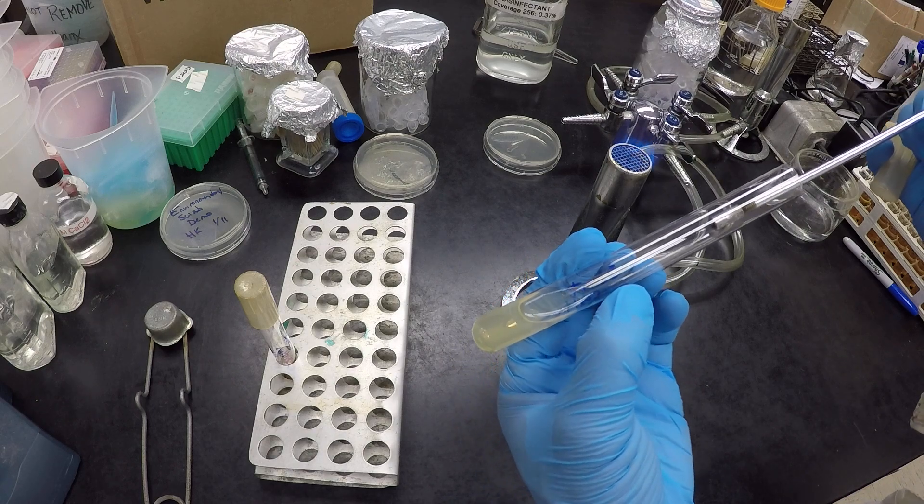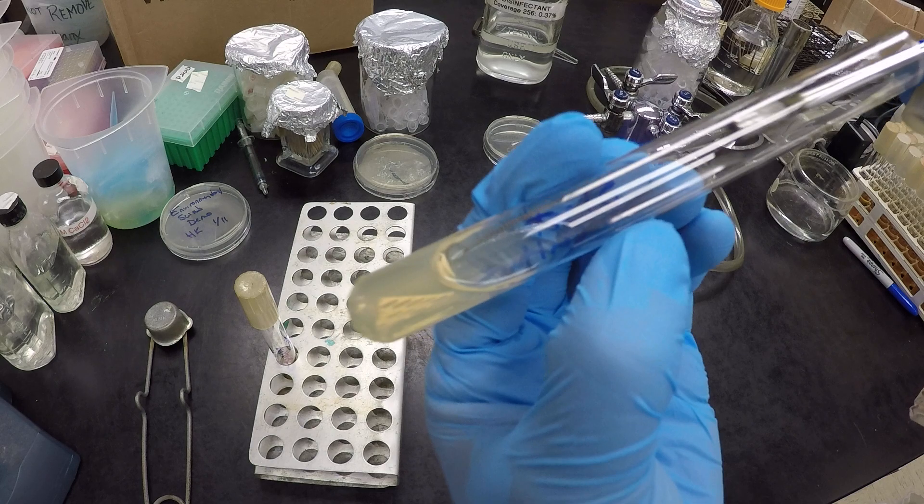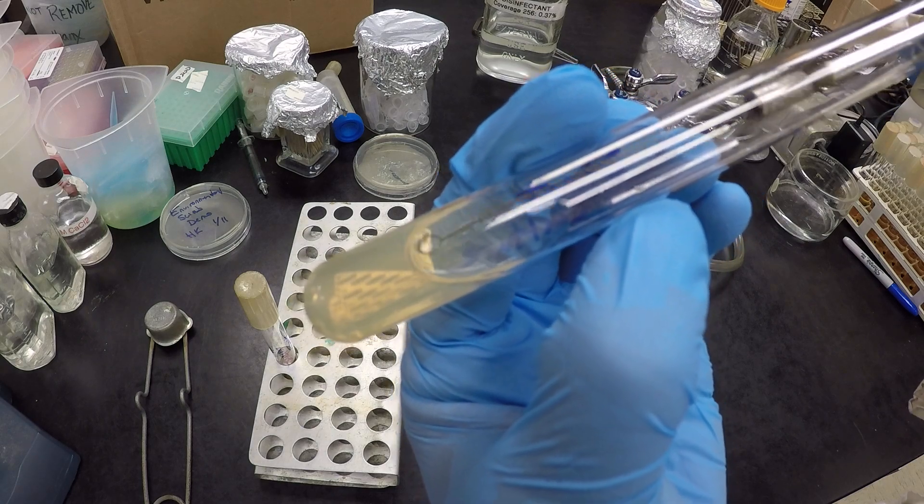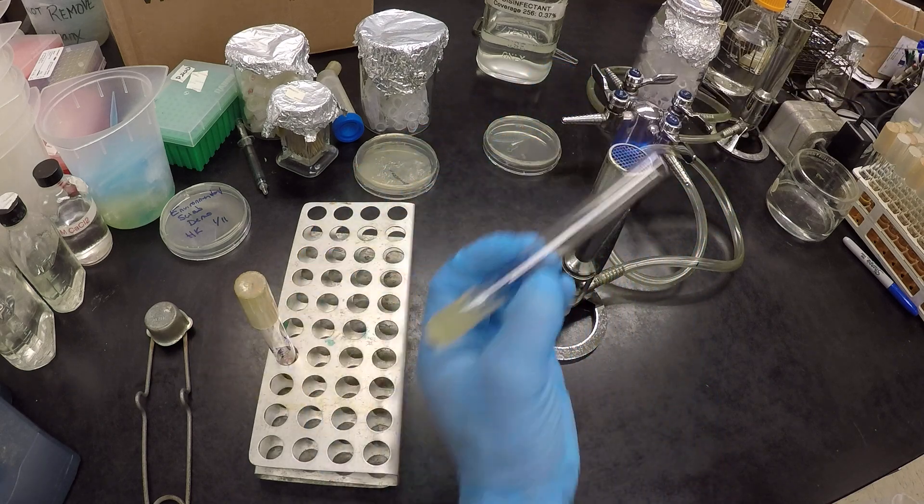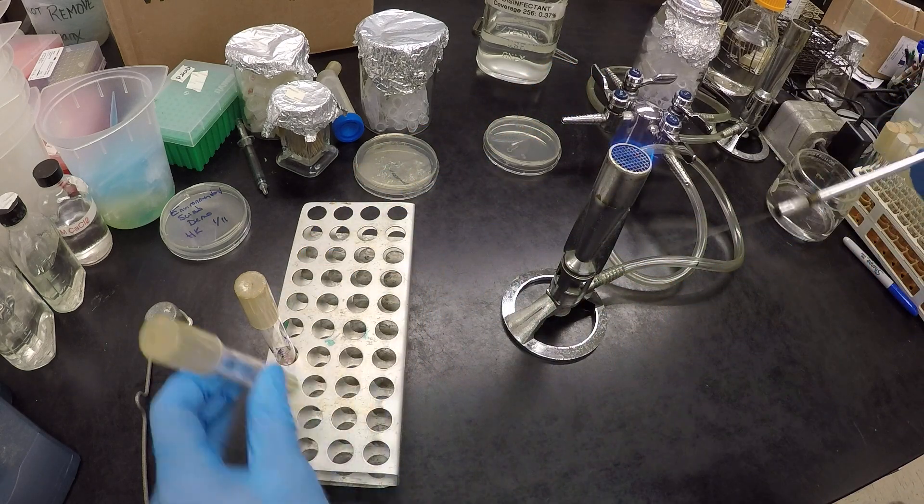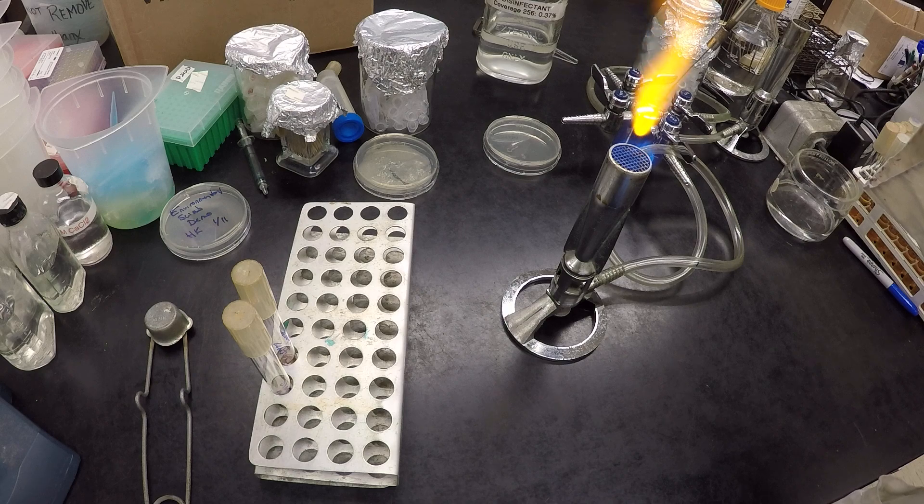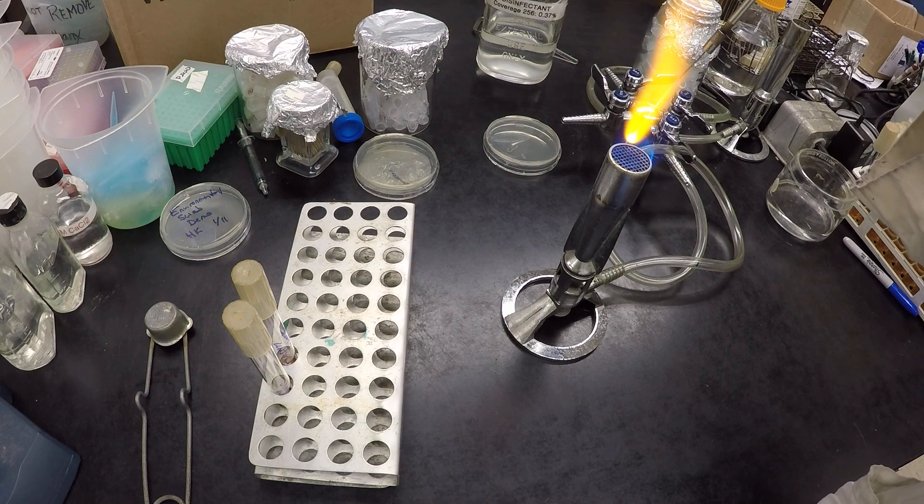Now, we let the wire loop do the work, touch the bottom of the slant, and then cover the slant. Just like that. Flame, put away, and sterilize, and that's it.